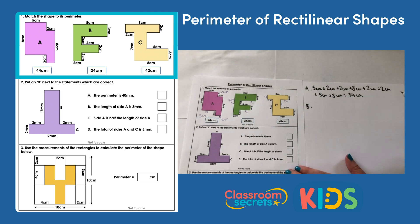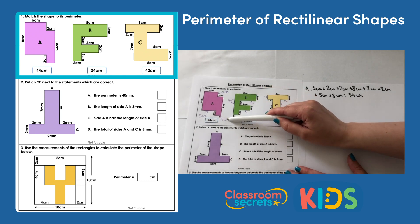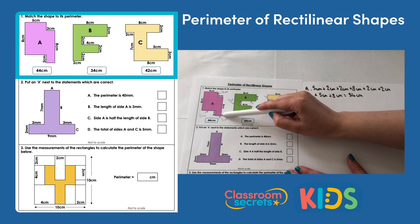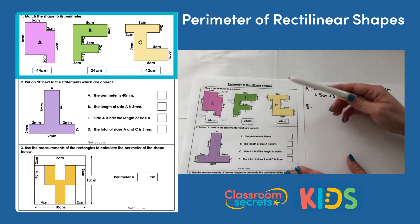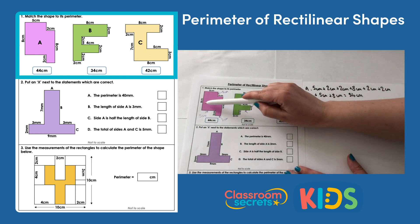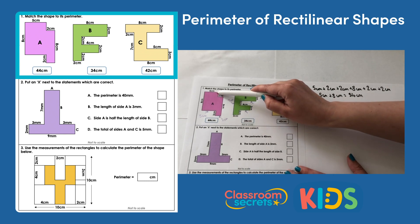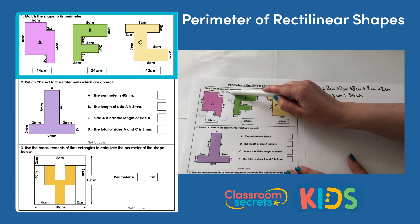Starting with shape A, we had some missing values — we needed to identify the length of these sides. To do that I've used my knowledge of rectilinear shapes. I know that each corner joins at 90 degrees so each corner will be a right angle, and that will help me decide which lengths are the same. I have two sides: 2 centimetres and 8 centimetres, so adding them together the total length of my shape is 10 centimetres. That means 10 centimetres subtract 8 centimetres is 2 centimetres, so this missing value must be 2 centimetres.